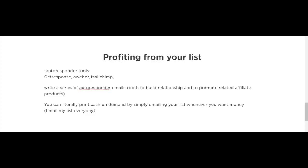Once you have a list of subscribers, it's like having an ATM machine. I email my list every day and promote affiliate products, earning commissions almost daily. Depending on your comfort level, you can email every day, every other day, or twice a week. You can also write a series of autoresponder emails to build a relationship and promote affiliate products automatically. You'll need an autoresponder such as GetResponse, Aweber, or MailChimp — I've used GetResponse for several years and highly recommend it.